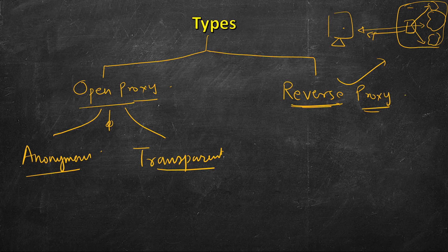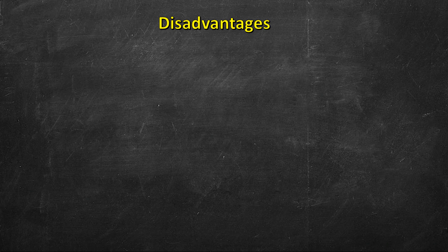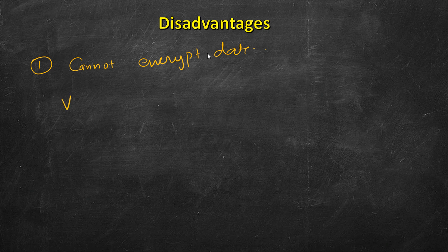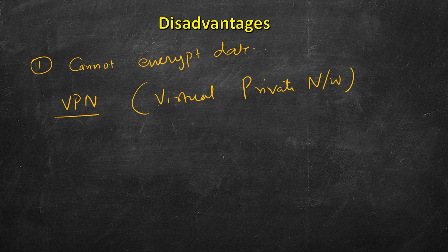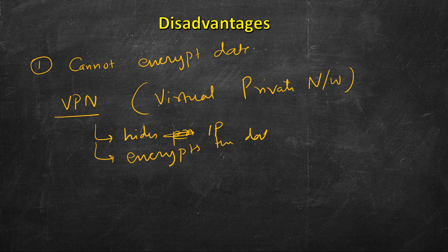We will look into reverse proxy in more detail in another lesson. Now, what are the disadvantages of a proxy server? Till now we have only talked about the positive sides. One drawback is that a proxy server cannot encrypt data. Data can be intercepted by a hacker, an internet service provider, or other parties. This is where VPN comes into the picture. VPN stands for Virtual Private Network. It not only hides the IP address and provides privacy like a proxy server, but also encrypts the data being transferred over the internet.